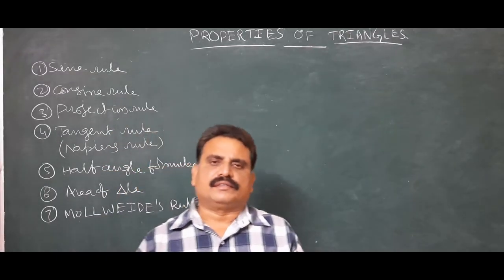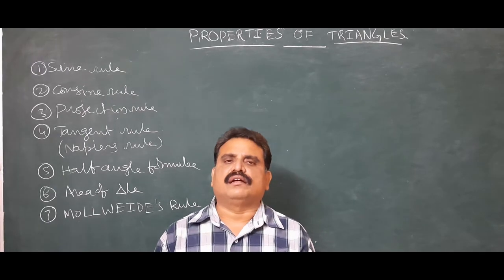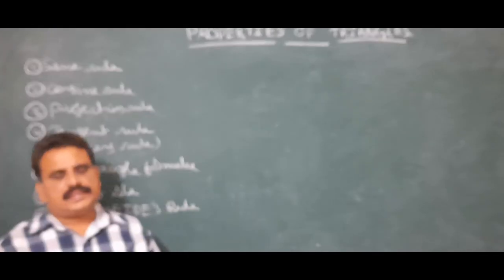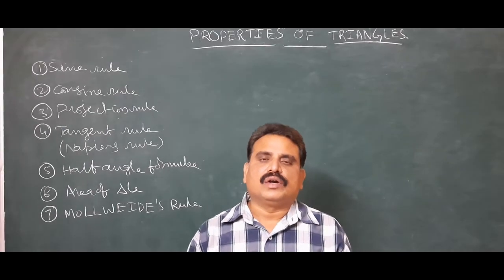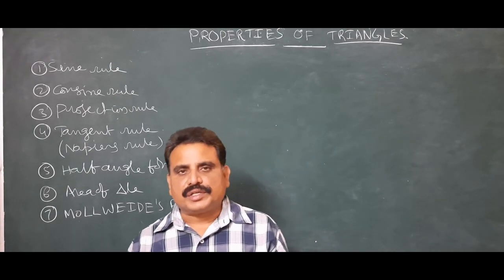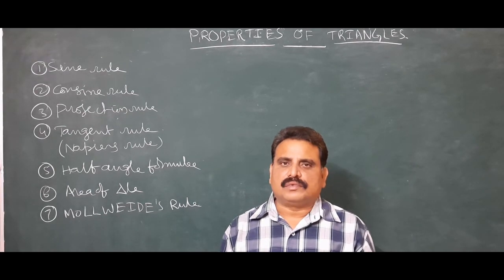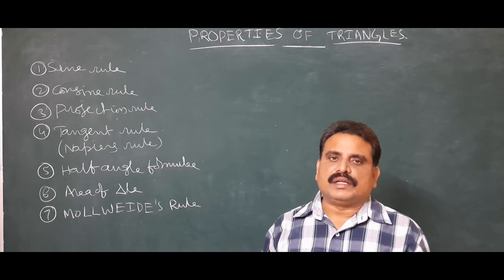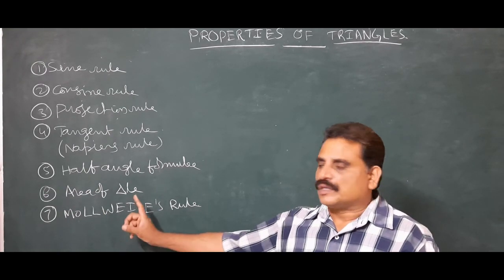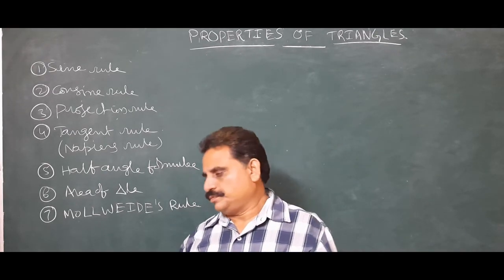Good morning, dear students. In this tutorial we discuss properties of triangles, that is, solution of triangles. The relation between the sides and angles in a triangle is called the properties of triangles. We discuss seven points: first, sine rule; second, cosine rule; third, projection rule; fourth, tangent rule or Napier's rule; fifth, half angle formulae; sixth, area of the triangle; and last, Mollweide's rule. These seven points we discuss with detailed proof.